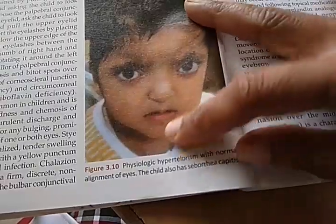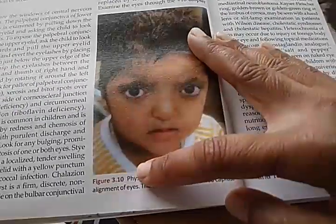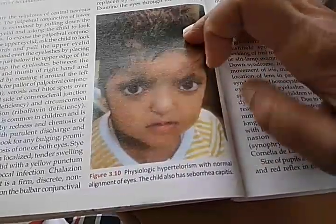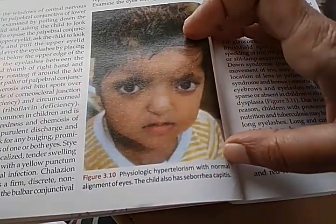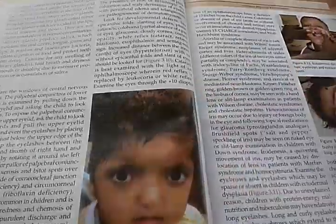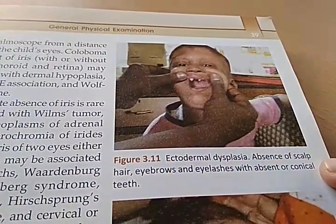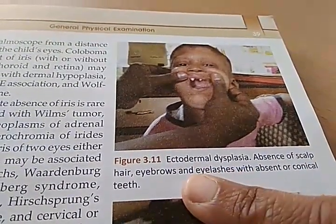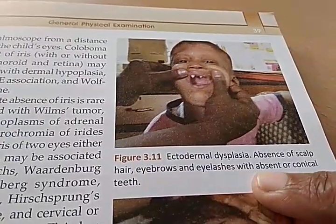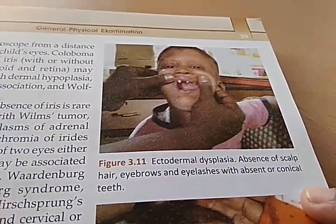They show physiologic hypertelorism with normal alignment of eyes — the child also has seborrhoea capitis. There is also a case of ectodermal dysplasia showing absence of scalp hair, with eyebrows and eyelashes present but absent or conical teeth.